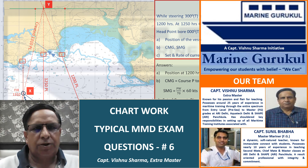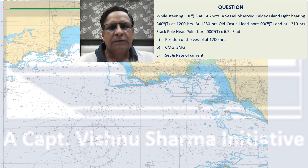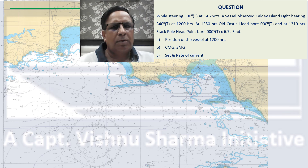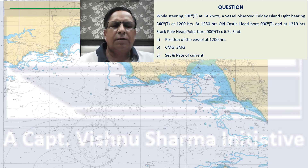We are pleased to present question number 6 in our video series on chart work — typical MMD exam questions. While steering 300 degrees true at 14 knots, a vessel observed Kaldi Island Light bearing 340 degrees true at 1200 hours. At 1250 hours, Old Castle Head bore 000 degrees true. And at 1310 hours, Stack Pole Head bore 000 degrees true at 6.7 miles. Find the position of the vessel at 1200 hours, course made good and speed made good, and set and rate of current.